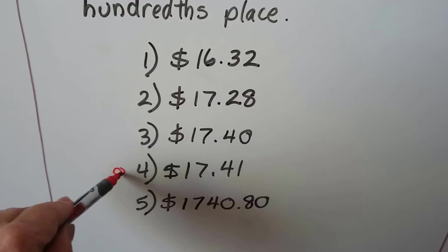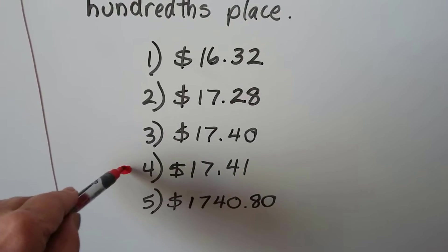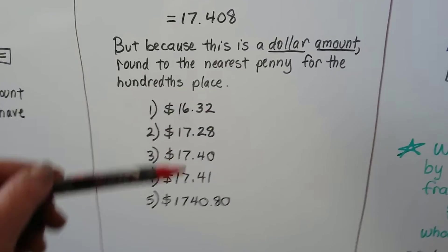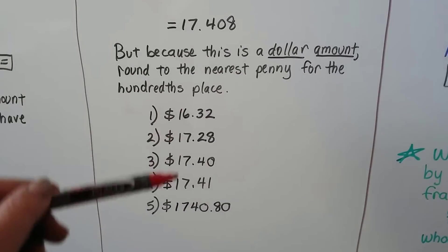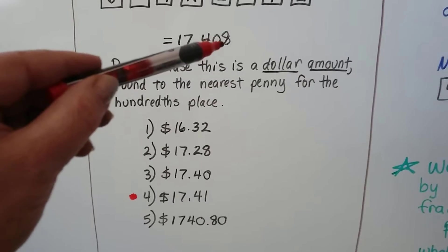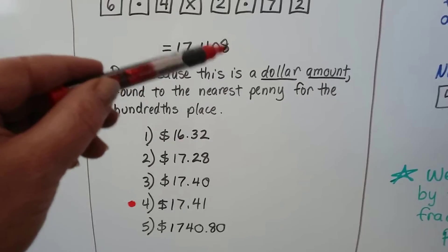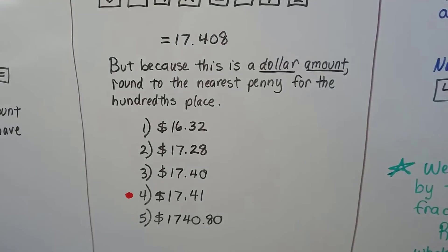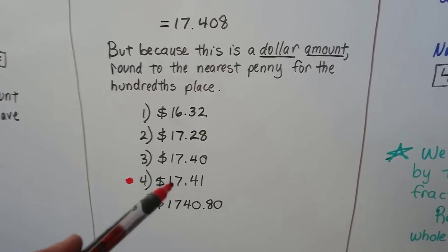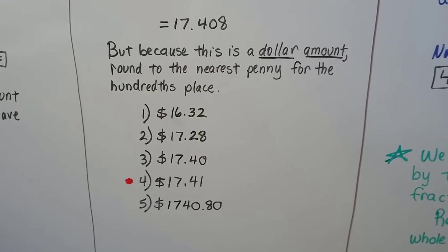And this is a money problem. We have to make sure there's a dollar sign in the answer. So, be careful of other answers that are very close or similar. $17.40 could fool you. That eight-tenths or the eight-thousandths would make this round up to a one.